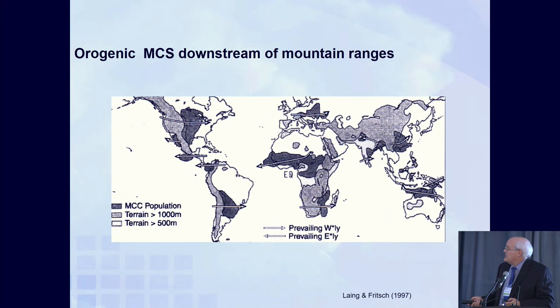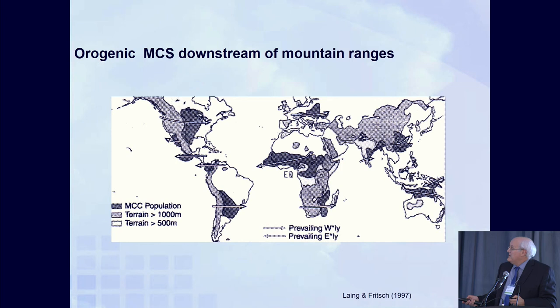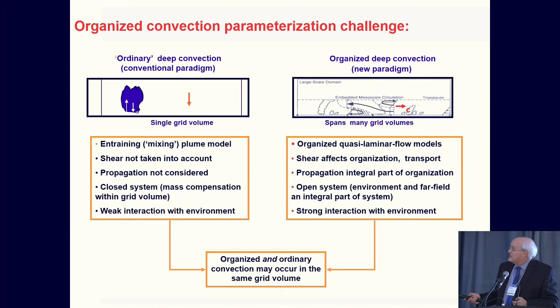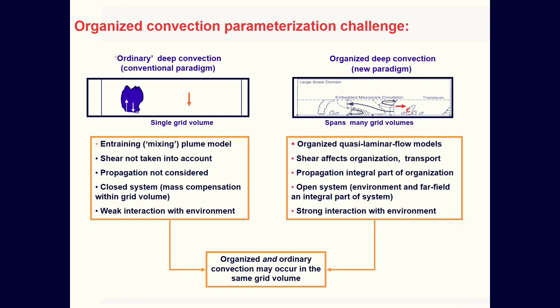Orographic MCSs downstream of mountain ranges are very ubiquitous — this is Arlene Lang and Mike Fritsch's work. You can see that even into Canada there are tremendous numbers of MCSs forming, as well as in South America, Africa, Australia, and Asia. Essentially, current convective parameterizations use a single-column model — very simple — whereas the 4-kilometer convective permitting approach is actually able to capture many of these effects.